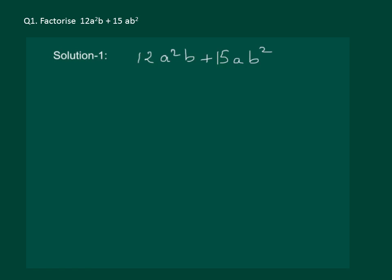Please read the question on the slide. It says, factorize 12a square b plus 15ab square. Let us try to solve this using the method of common factors. From the first term, we can see that 12 and in the second term 15, both are divisible by 3. Hence, 3 can be taken out as common.